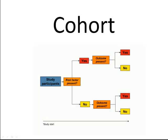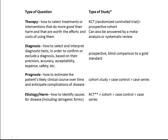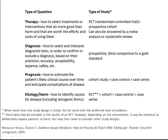Similarly, a cohort study follows patients forward over time. This is therefore a relevant study design to look for when you have a question of prognosis. This table shows the best study design for each type of question being asked. Note that when more than one study design is listed, the list starts with the preferred level of evidence. Also note that harm data may be included in the results of an RCT, but depending on the intervention, it may be unethical to deliberately expose patients to harm. You may then need to consider other study designs.